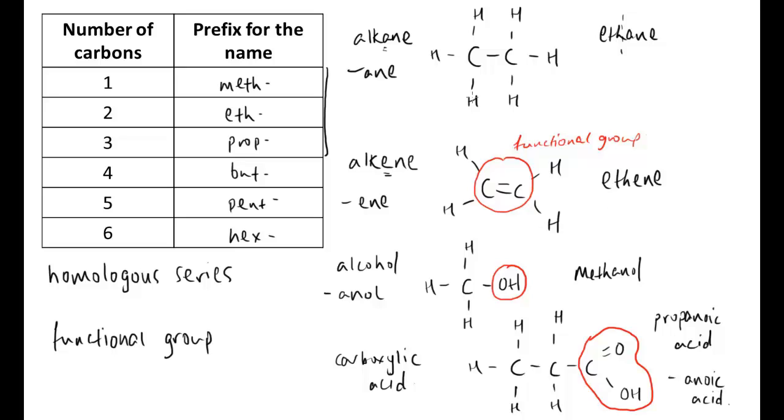One point worth noting is that a way to draw these molecules and make sure you've drawn them correctly is to make sure all the carbons always have four bonds - that is to say they have four lines coming off them. So here carbon has one, two, three, four, this carbon one, two, three, four, this one one, two, three, four.